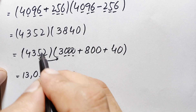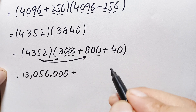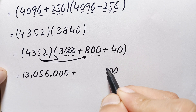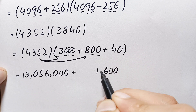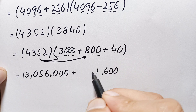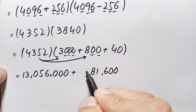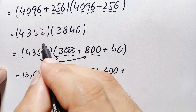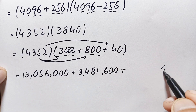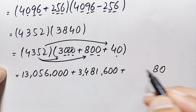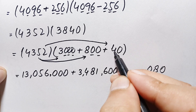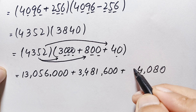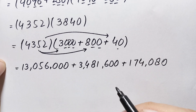Multiplying 4352 × 800: 4352×0=0; 8×2=16 carry 1, 8×5=40+1=41 carry 4, 8×3=24+4=28 carry 2, 8×4=32+2=34. This gives 3,481,600. Multiplying 4352 × 40: 4352×0=0; 4×2=8, 4×5=20 carry 2, 4×3=12+2=14 carry 1, 4×4=16+1=17. This gives 174,080.